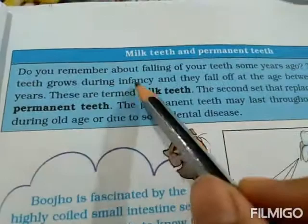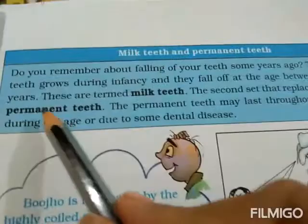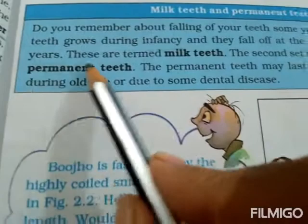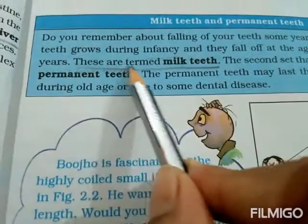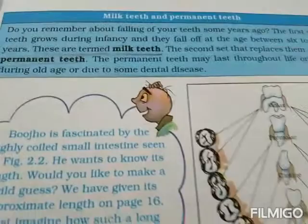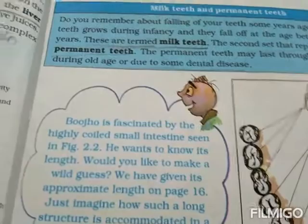The first set of teeth grows during infancy and falls off between the ages of 6 to 8 years — these are called milk teeth. The second set that replaces them are the permanent teeth. Permanent teeth may last throughout the life or fall off during old age or due to some dental disease.